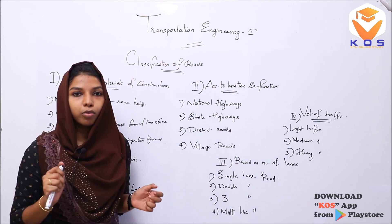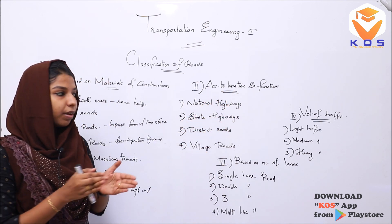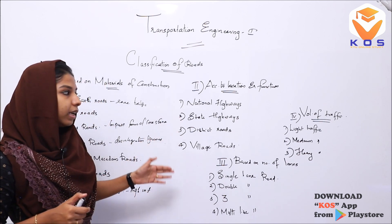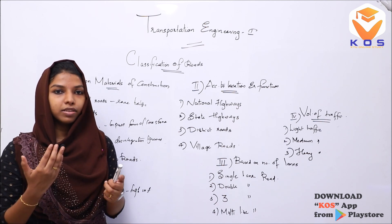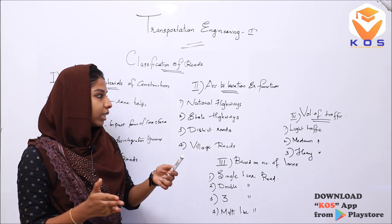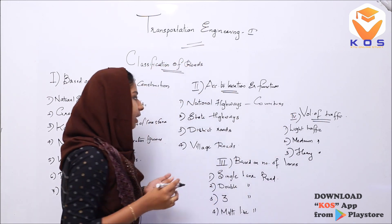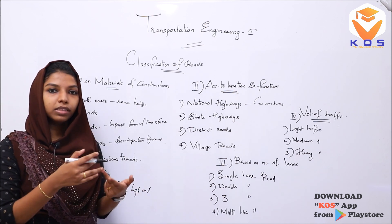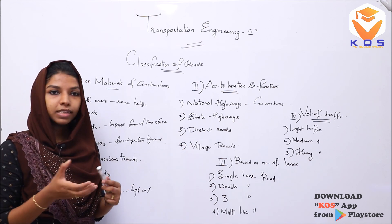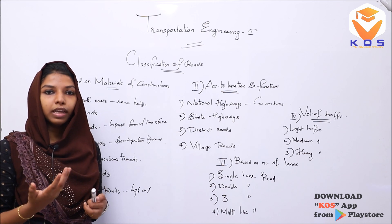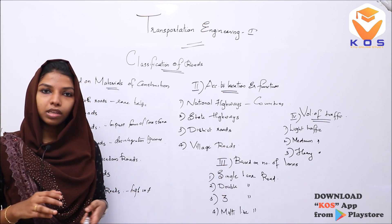The second classification is based on location and function. We classify roads into 4 types: national highways, which connect countries; state highways, connecting states; district highways, for district-to-district transportation; and village roads, which connect village places.